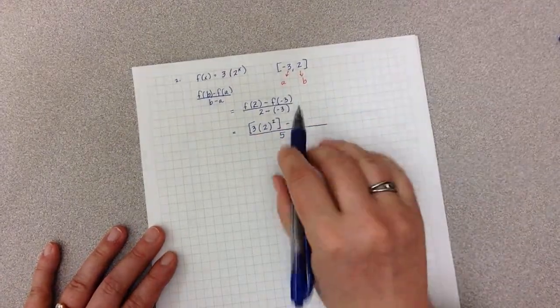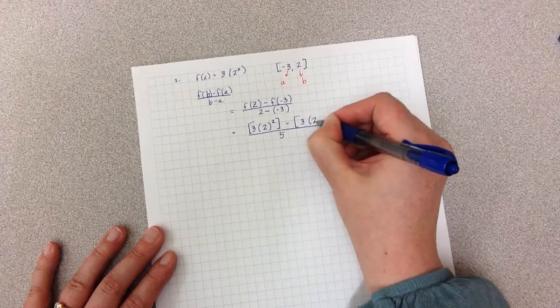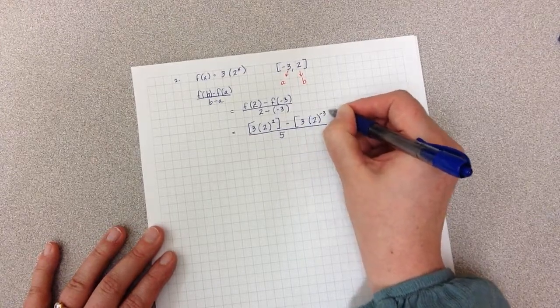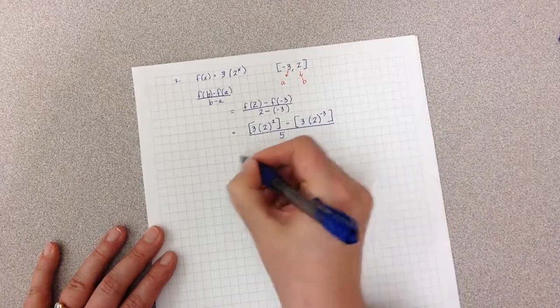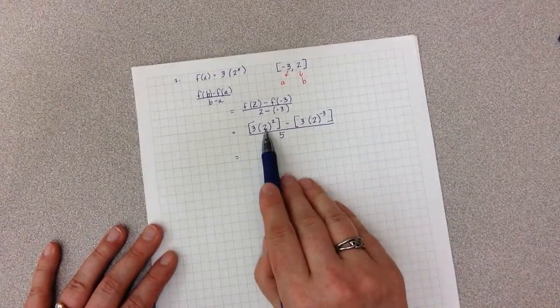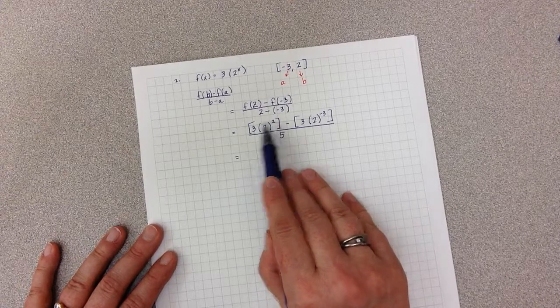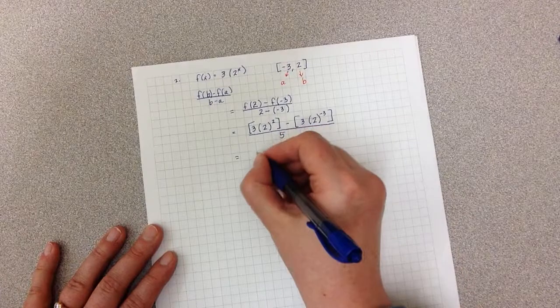Minus my second function, which is 3 times 2 to the negative 3 power. Simplifying the top, do exponents first. 2 to the second is 4 times 3 is 12.